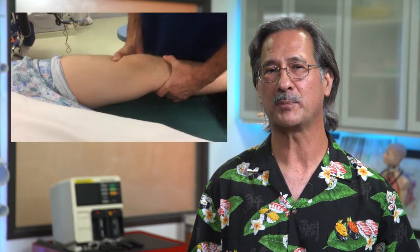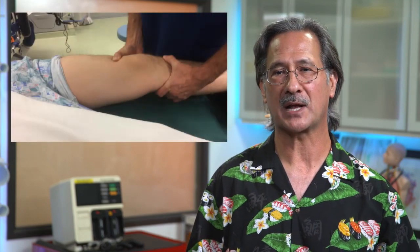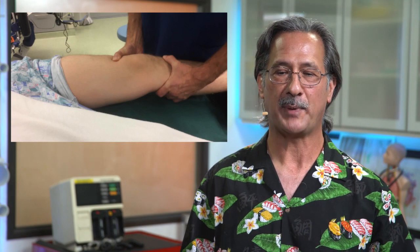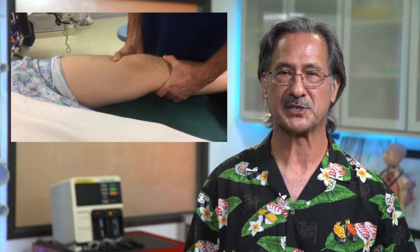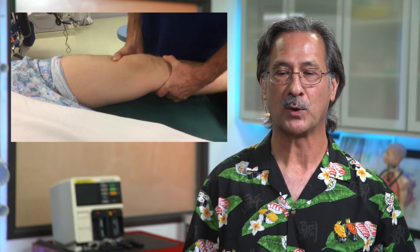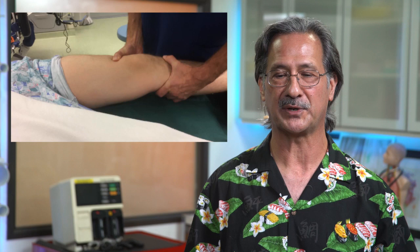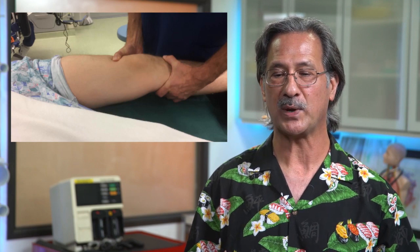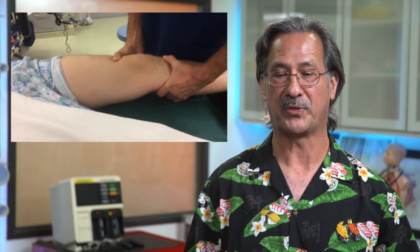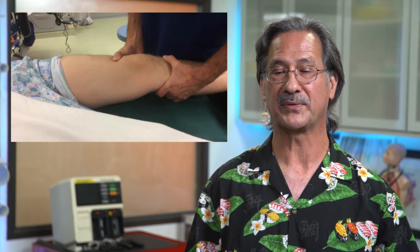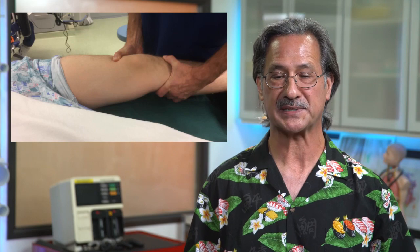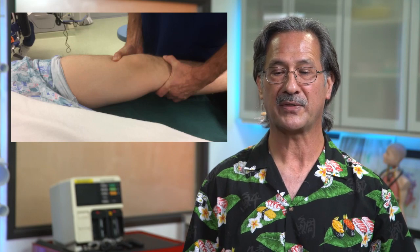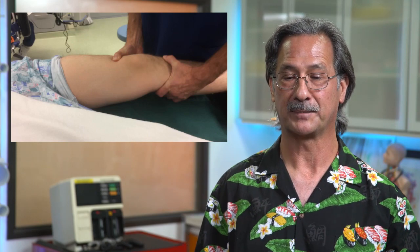How do we perform the test? Let's take a look at this video, but before we play it, let's talk about patient positioning. The patient is positioned supine with the knee flexed about 20 to 30 degrees. The examiner puts one hand behind the proximal leg with the thumb overlying the tibial tuberosity. The other hand then grasps the thigh.